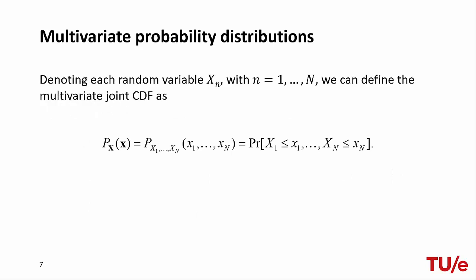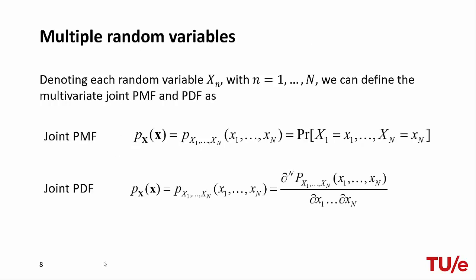Now that we have multiple random variables, we need multivariate probability distributions. The joint CDF for multiple random variables can be seen as an extension of the joint CDF for pairs of random variables. The random vector notation also comes in handy, as we can avoid listing all the variables and simply use the bold notation. Very similarly, we can obtain the joint PMF and the joint PDF as straightforward extensions of the case for pairs of random variables.